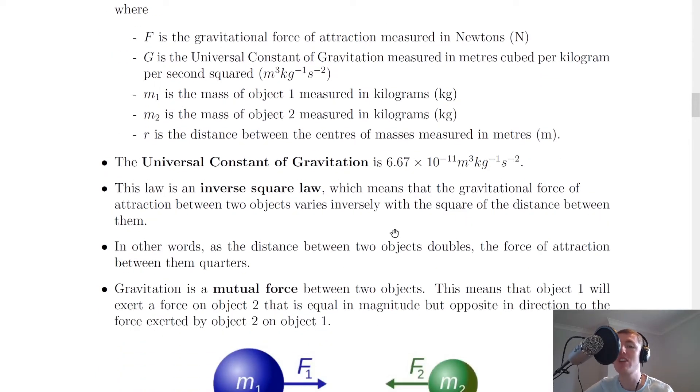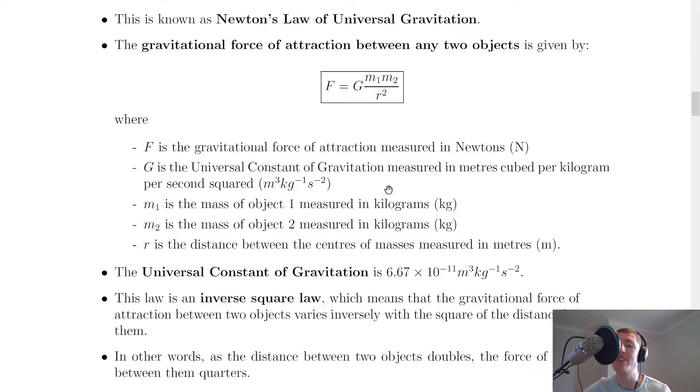The universal constant of gravitation is found on the data sheet in your exam, and it's given a value of 6.67 times 10 to the minus 11 meters cubed per kilogram per second squared. You get this equation on the relationship sheet in the exam.